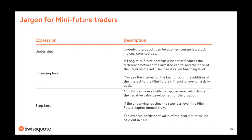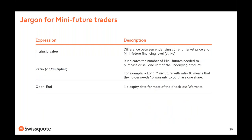Stop loss: mini futures have a built-in stop loss level, which limits the negative value development of the product. If the underlying reaches the stop loss level, the mini future expires immediately with a residual value. That residual value — also called the settlement value — will be paid out in cash on your trading account by the issuer. If the financing level and the stop loss level are equal to zero, the payout will also be zero. But most of the time, there is a residual value. This is the biggest difference from knockout warrants, where there is no residual value.